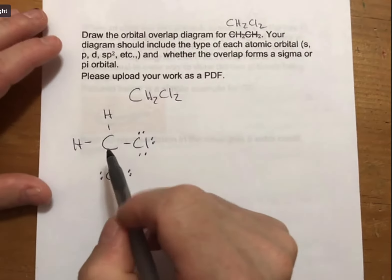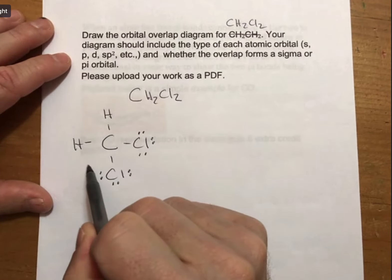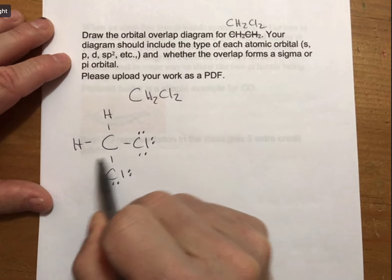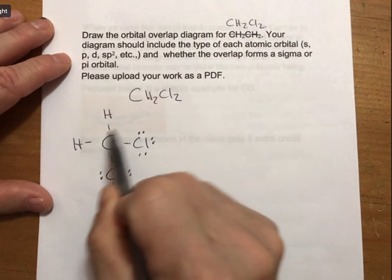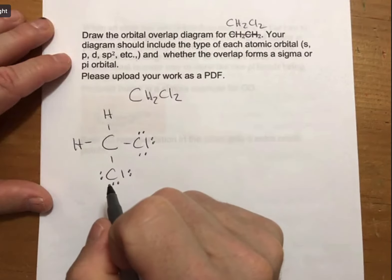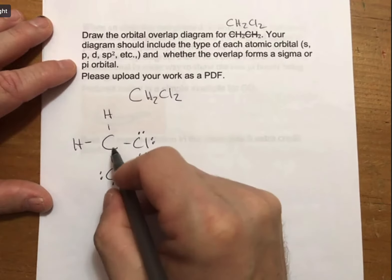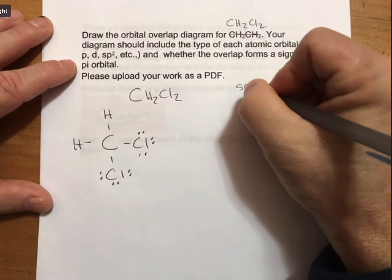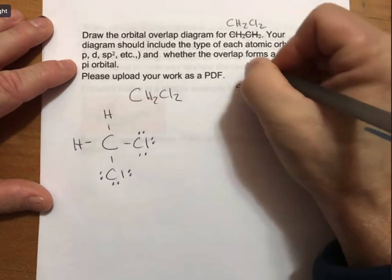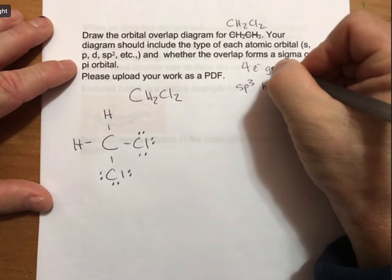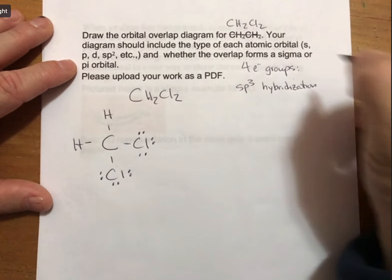This is the best Lewis structure. There are no formal charges in here. We know a lot about this already. This central carbon has an sp3 hybridization because there are four electron groups, similar to the last example.